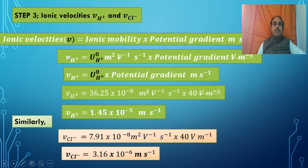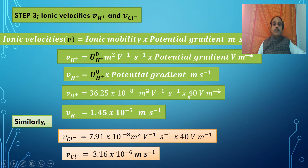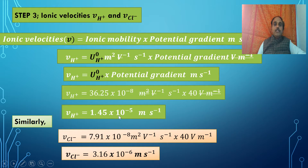The velocity of H⁺ is equal to its ionic mobility, 36.25 × 10⁻⁸ meter² per volt per second, multiplied by the potential gradient of 40 volt per meter. The meter and per-meter cancel, and volt and per-volt cancel, leaving meter per second. The answer is 1.45 × 10⁻⁵ meter per second.